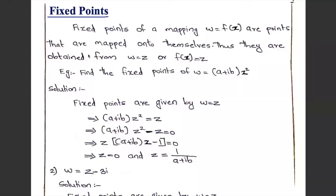Fixed points of a mapping w equal to f of z are points that are mapped onto themselves. Thus they are obtained from w equal to f of z, or f of z equal to z.